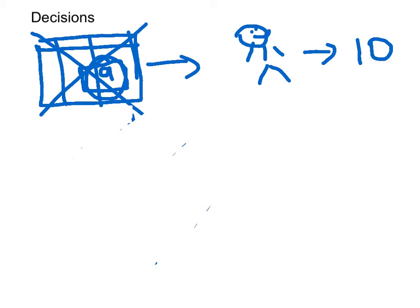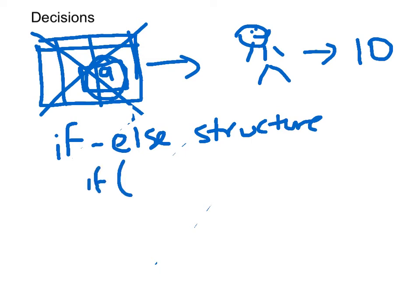So decisions—essentially in order to make a decision in our program, in most programming languages it's called an if-else structure. So what we say: if, and then we put it in brackets, we say if the user...